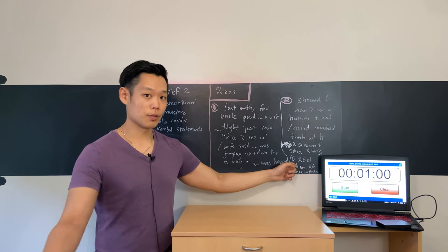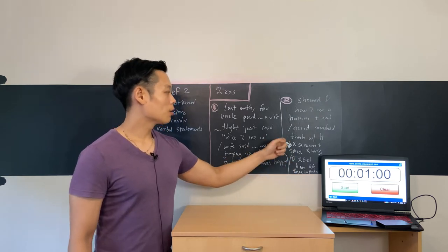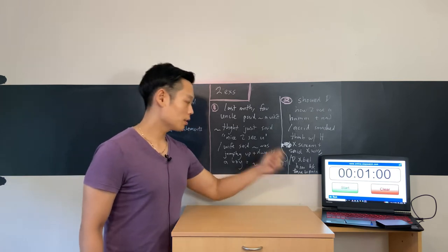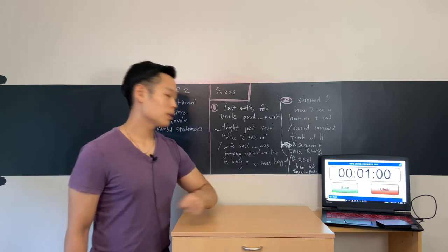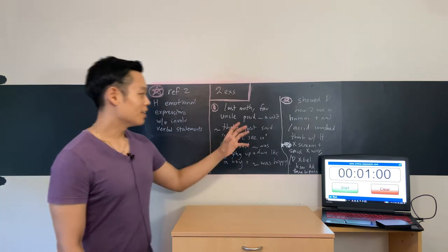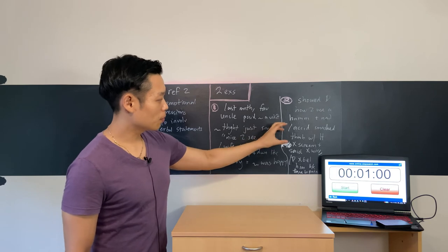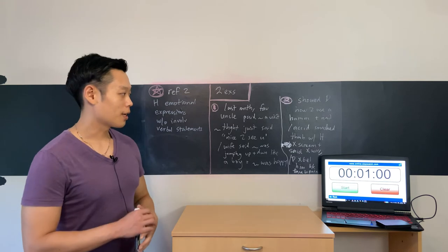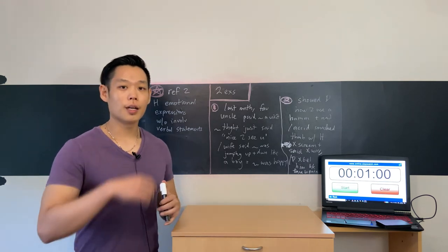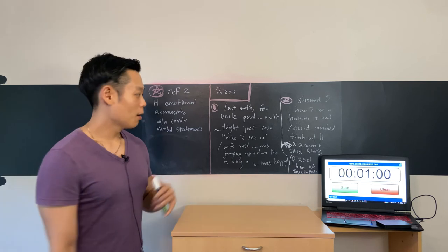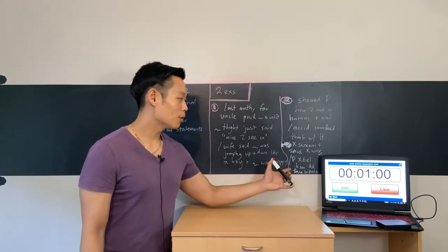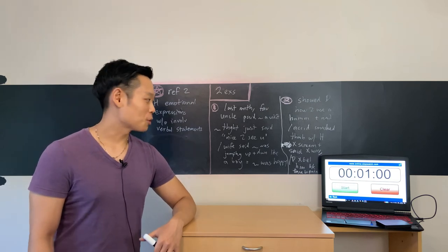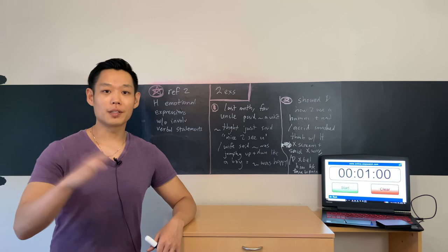Now since I already said 'however' in this part right here, I'm going to say 'on the other hand' or 'but.' But he accidentally smashed his thumb with the hammer. Now I'm not going to add a conjunction here because I'm going to say something like 'yet' or 'nevertheless' right here. So I'm just going to go ahead and say the professor didn't scream and said 'Don't worry' to his daughter. Nonetheless, his daughter didn't believe him because his face was in a lot of pain.